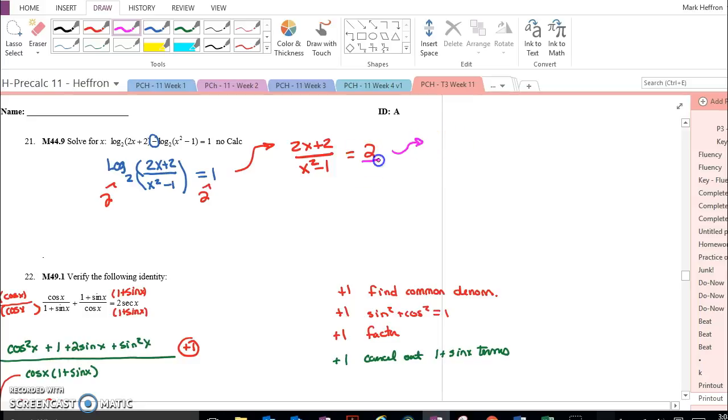So we would cross-multiply, or multiply both sides by x squared minus 1, and get 2x plus 2 equals 2x squared minus 2. Remember we have to distribute the 2 to both terms.